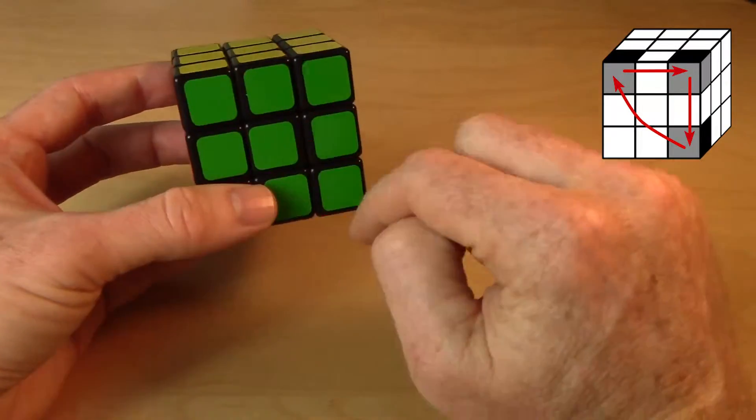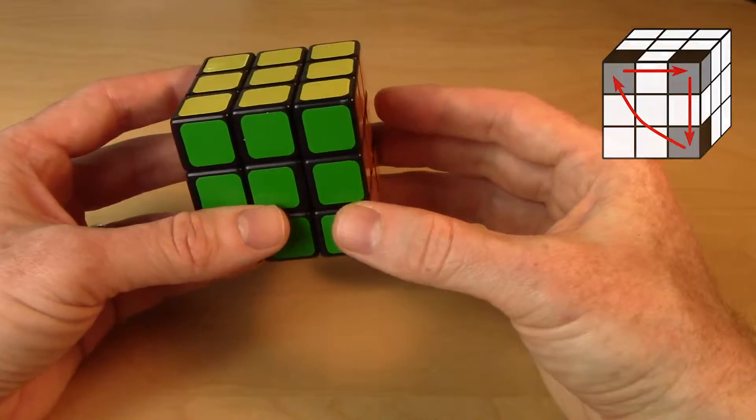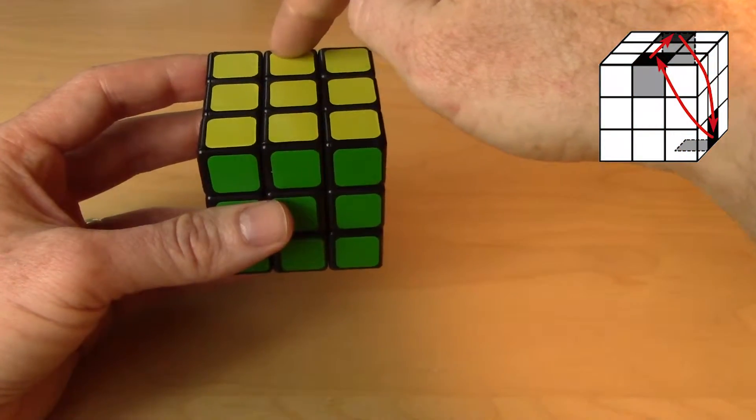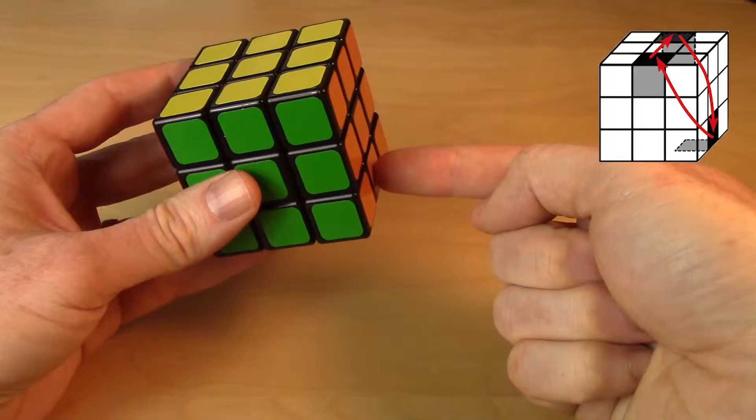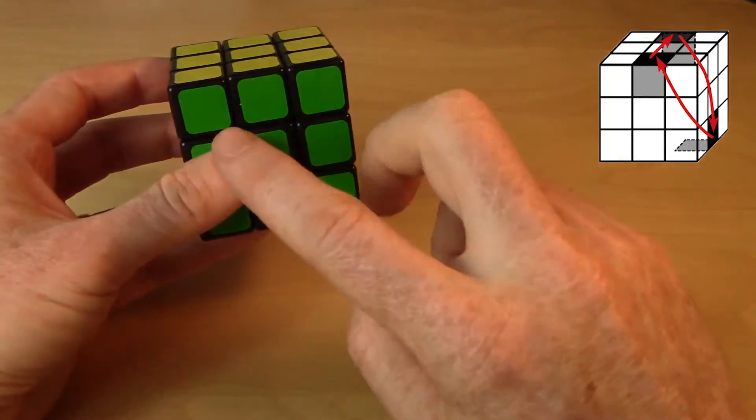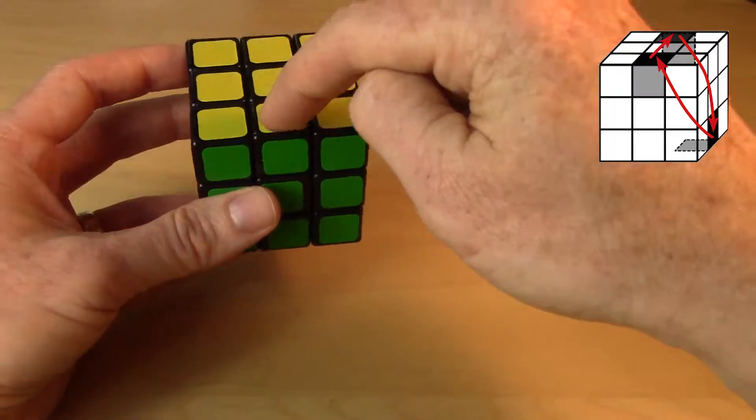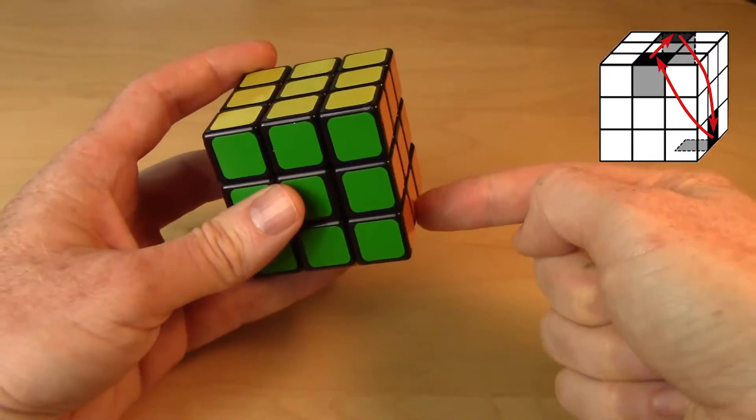So reminiscent of that corner 3-cycle, we've got an edge 3-cycle that we can do. And I'm going to cycle this edge, this edge, and this edge. Okay, so similar to the one in the corners, two corners in the top, one in the bottom. We're going to do two edges in the top, one in the bottom.